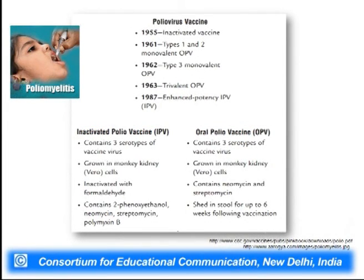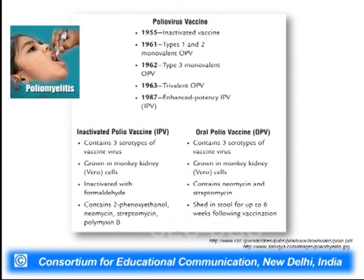The inactivated polio vaccine was discovered in 1955, the oral polio vaccine in 1961–1962 for various types of polio viruses, and an enhanced potency IPV in 1987. Inactivated polio vaccine contains three serotypes of vaccine viruses, is grown in monkey kidney cells, and is inactivated with formaldehyde. The oral polio vaccine also contains three serotypes grown in monkey kidney cells and contains the antibacterials neomycin and streptomycin.